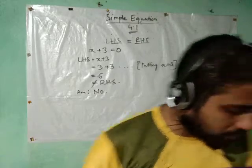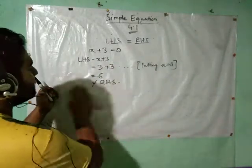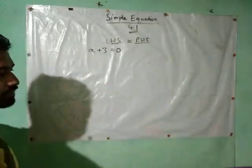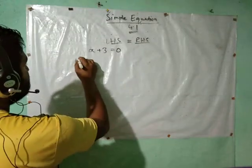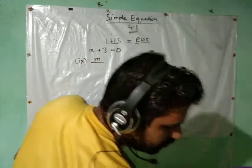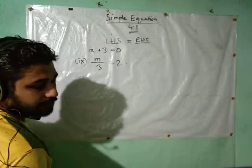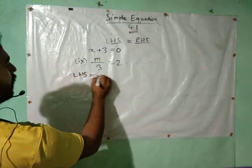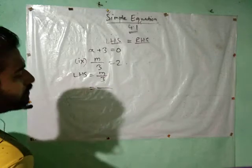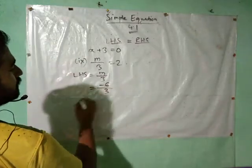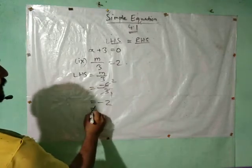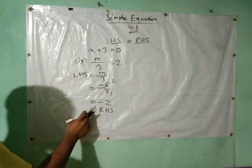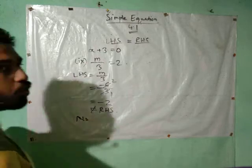Similarly, let's look at question number 9. The equation is m/3 = 2, and the given value of m is −6. LHS = m/3 = −6/3 = −2. But RHS = 2. So −2 is not equal to +2. Therefore LHS is not equal to RHS, and the answer is: No, the equation is not satisfied.